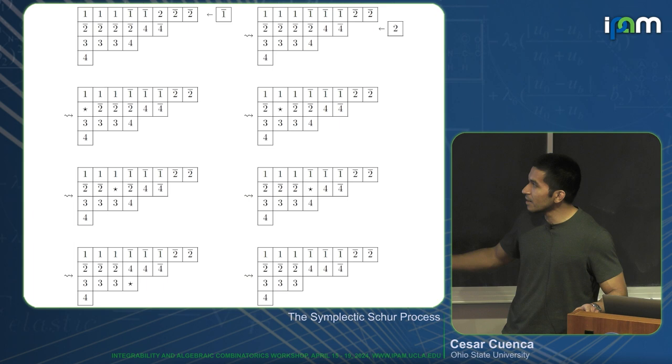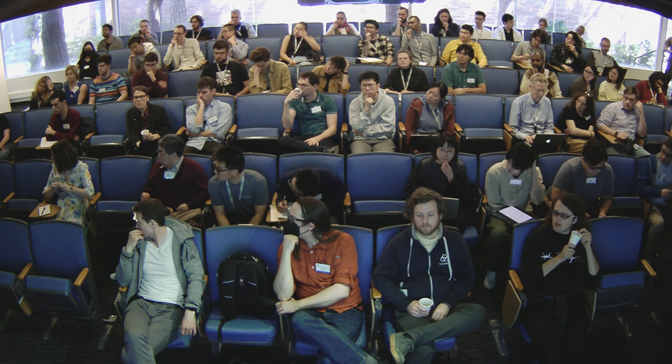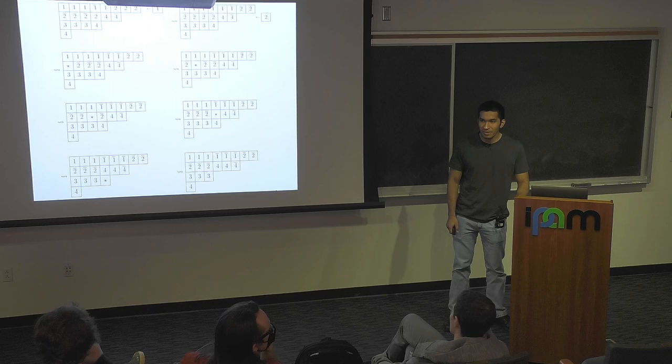A question from the audience: is the star's path always determined, or could there be two choices? No, there's never two choices — the path is determined. This is a deterministic operation called jeu de taquin.